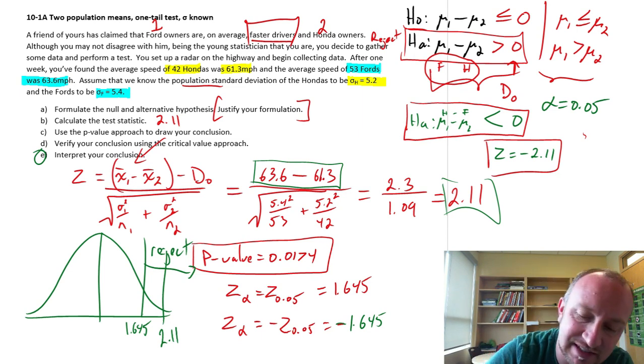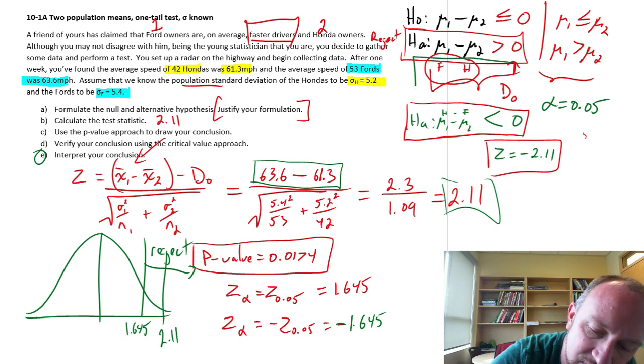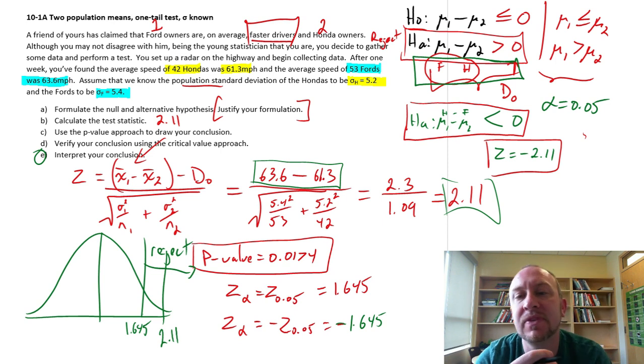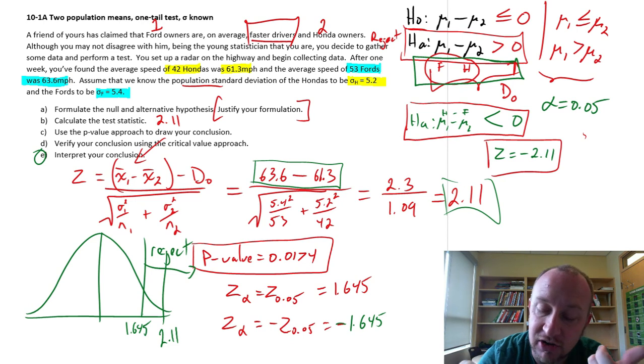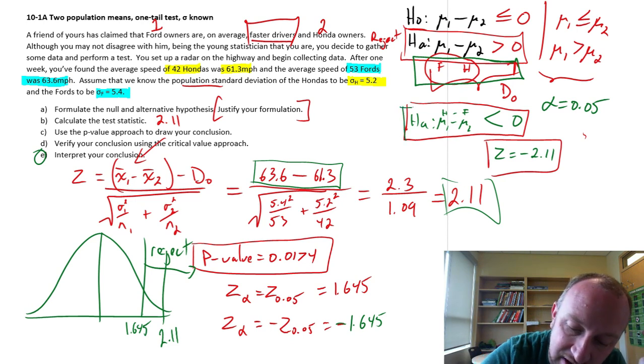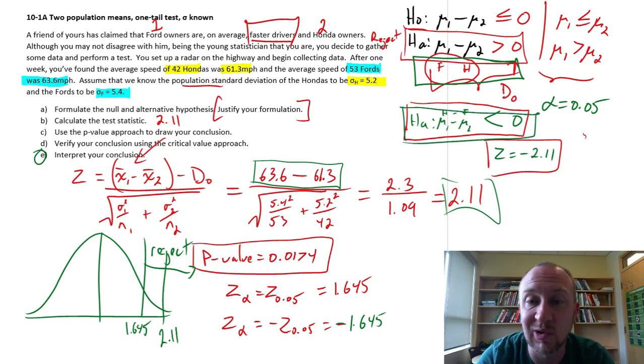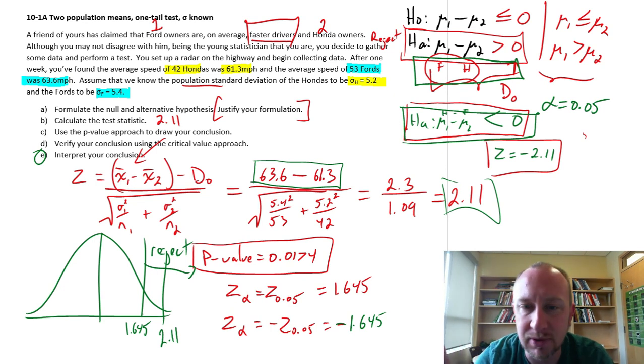Which allows us to say that on average, the Ford owners are faster than the Honda owners. Or simultaneously, depending on how we defined our terms, we could also say that the Honda drivers are slower than the Ford owners. Both of these outcomes are the same.